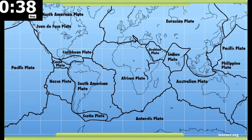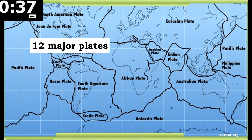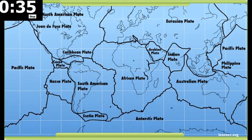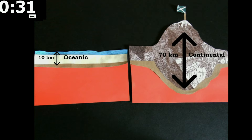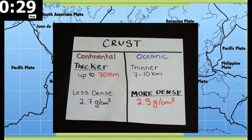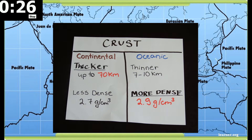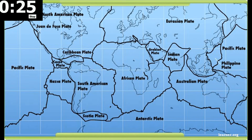The crust, the outer layer of the Earth, is divided into 12 major plates and several microplates. Crust can be continental or oceanic. Continental crust is thicker but less dense than oceanic crust. Some plates consist entirely of oceanic crust, while others consist of both oceanic and continental.